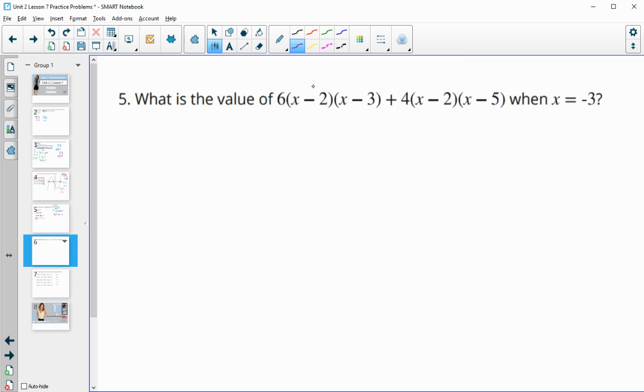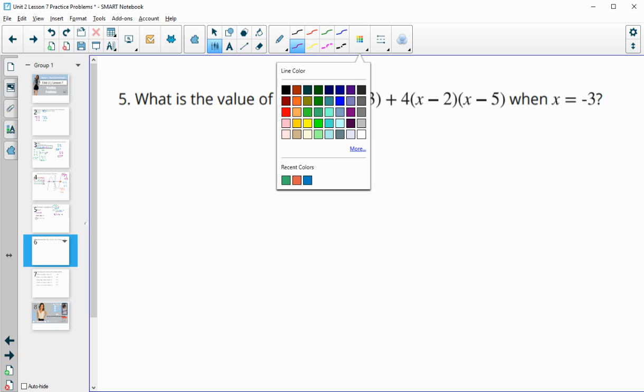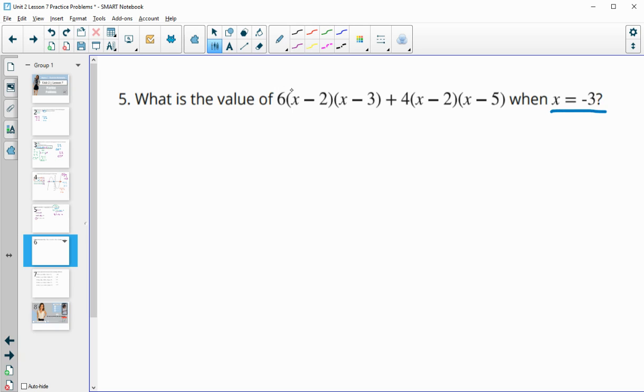Number 5, what is the value of 6 times x minus 2 times x minus 3 plus 4 times x minus 2 times x minus 5 when x equals negative 3? We're going to take this negative 3 and plug it in everywhere we see x. So we're going to do negative 3 here, negative 3 here, here, and here.